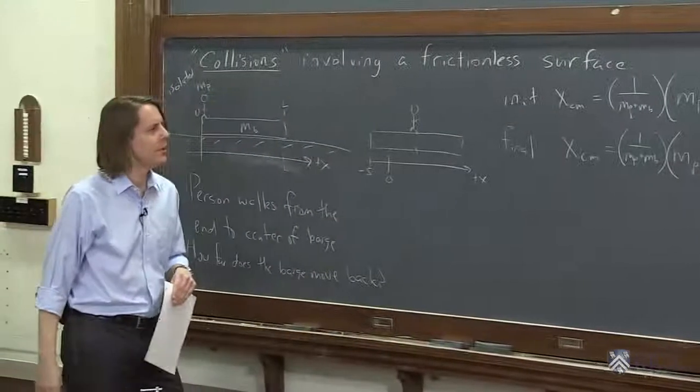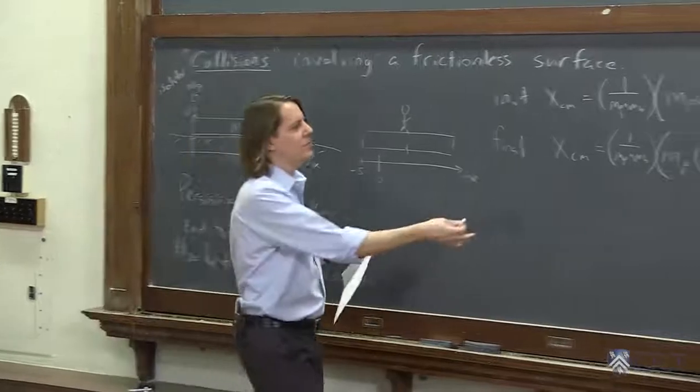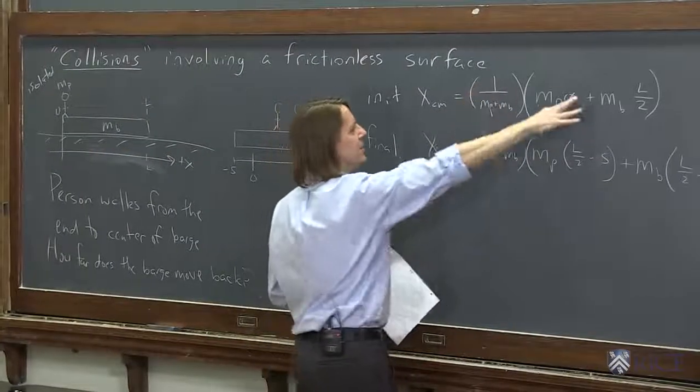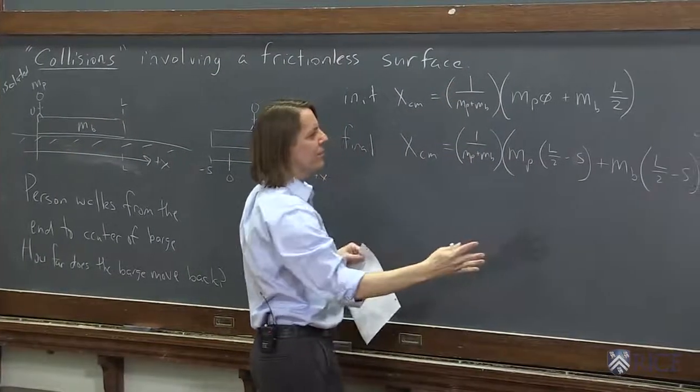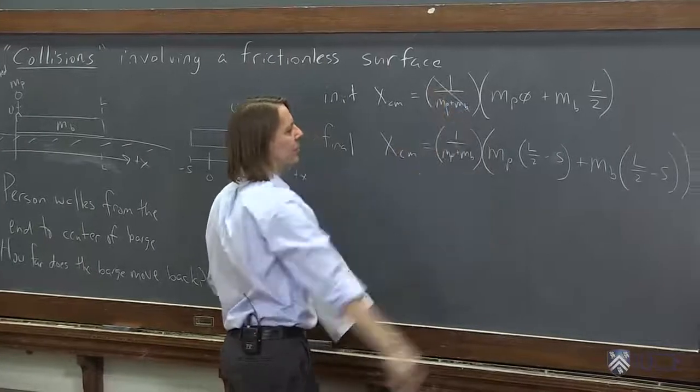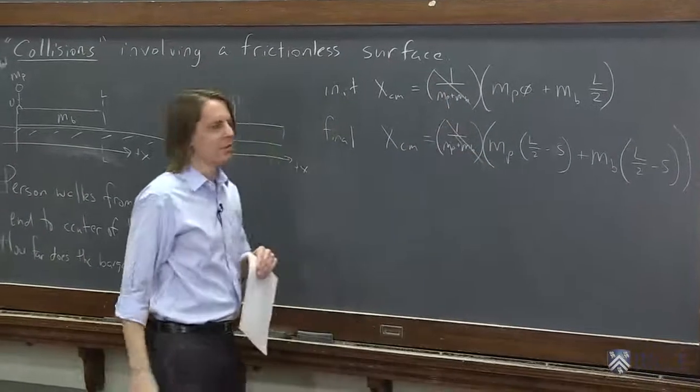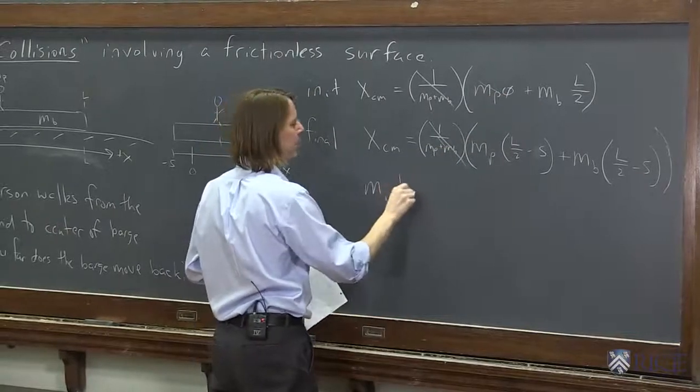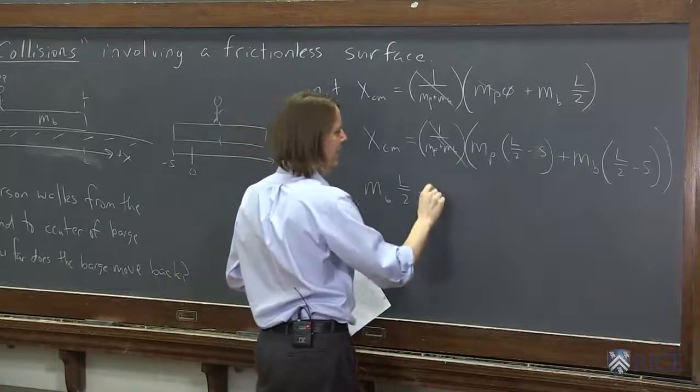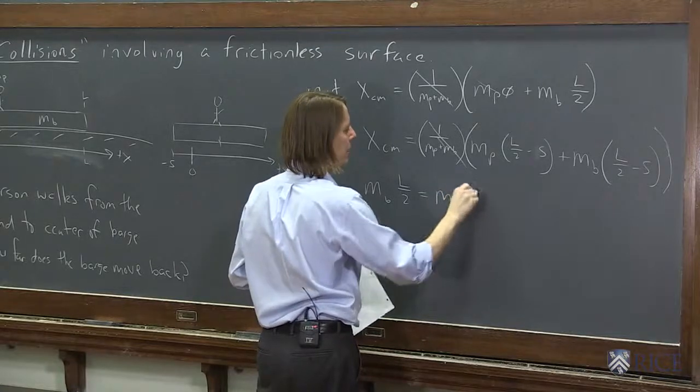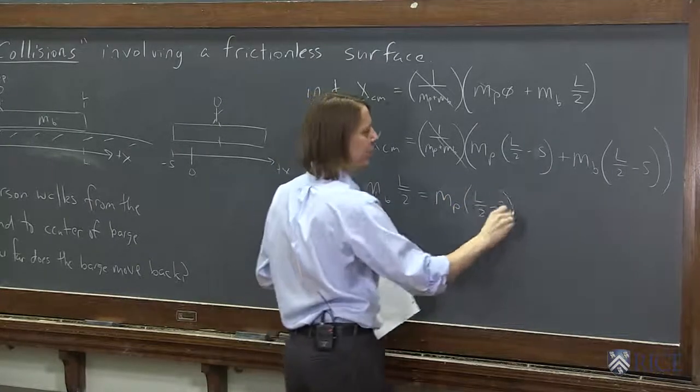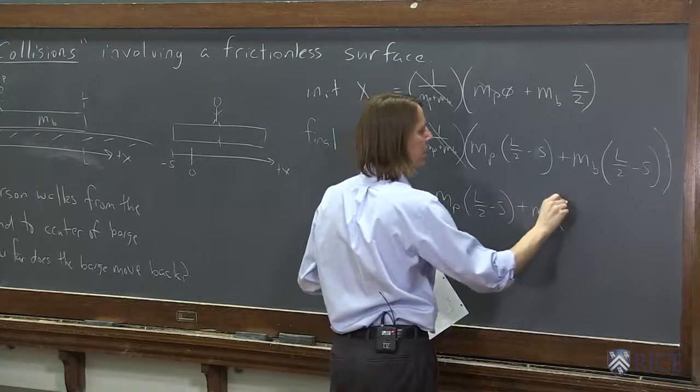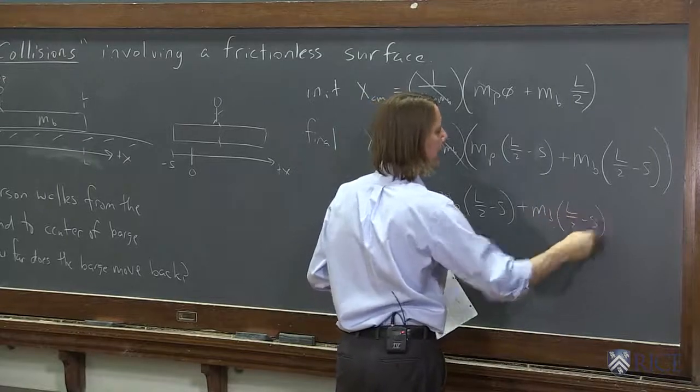I really should start reading these notes ahead of time. All right, so now what we're going to do is equate these two. Let's equate this equals to this. So the first thing we can do is cancel the common term. Total mass doesn't matter. And then we would say, oh, well, that's zero.